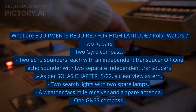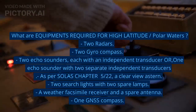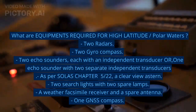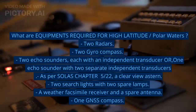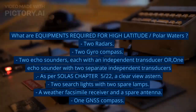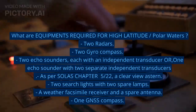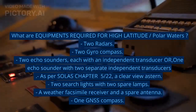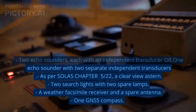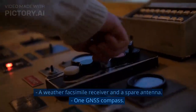Equipment required for high latitude polar waters includes: two radars, two gyro compasses, two echo sounders each with an independent transducer or one echo sounder with two separate independent transducers, as per SOLAS Chapter 5. Also required are a clear view astern, two searchlights with two spare lamps, a weather facsimile receiver with a spare antenna, and one GNSS compass.